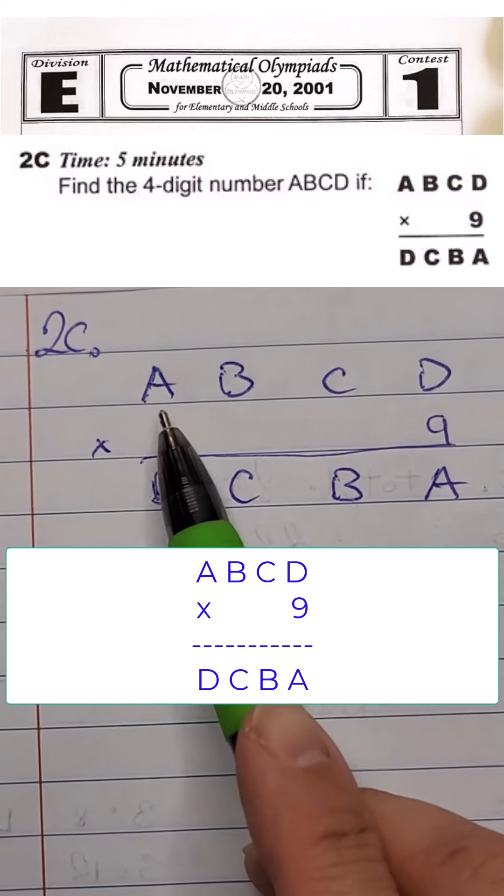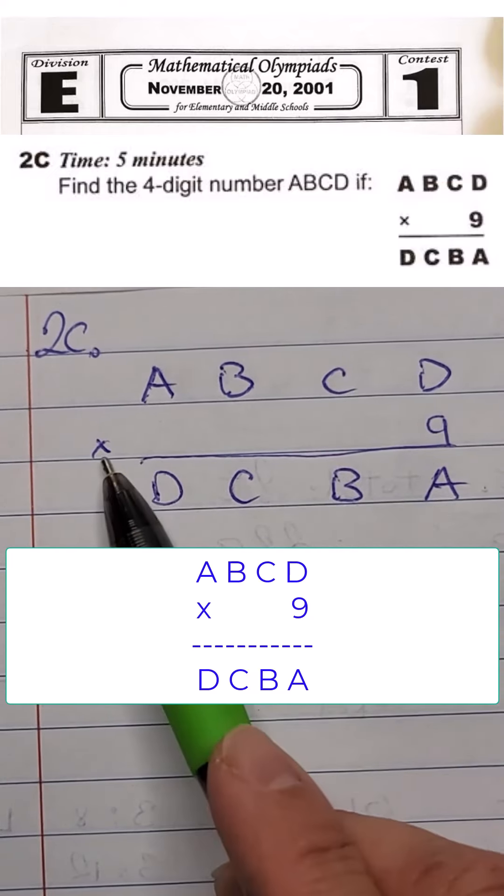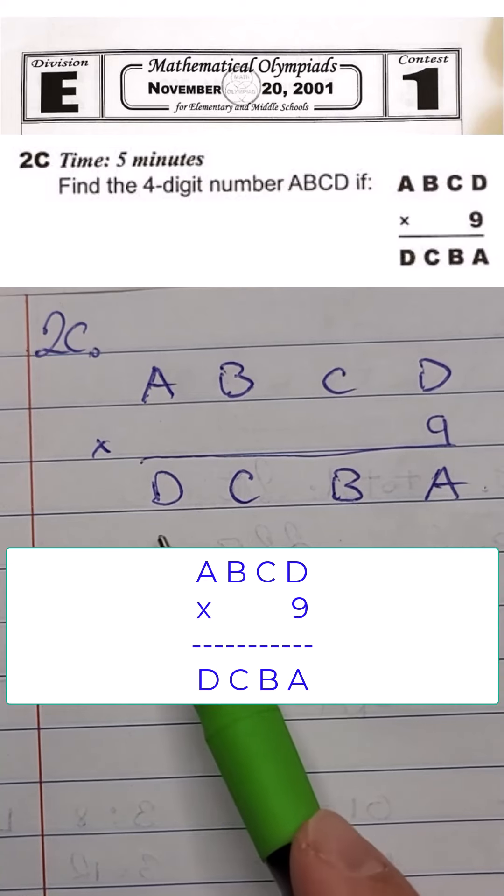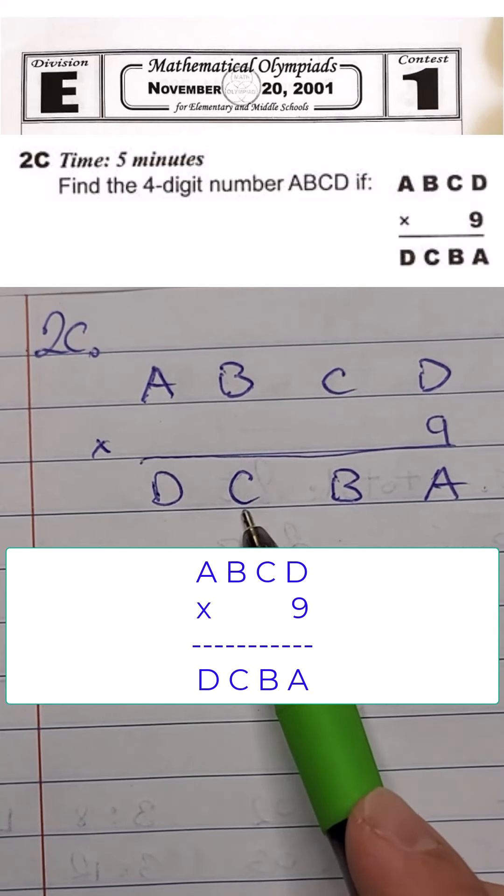For question 2C, A, B, C, D, multiplied by 9, equal to D, C, B, A.